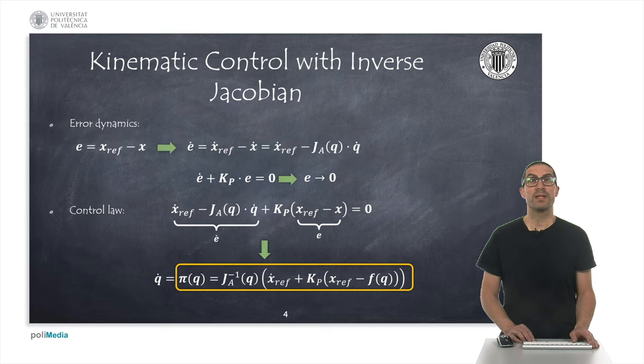If we define the error signal as the difference between the reference trajectory and the current position of the end effector, we can derive the error dynamics from its derivative. Obviously, the derivative of the error is the difference between the velocity of the trajectory and the velocity of the end effector. Using the differential kinematic model, we can express this error as a function of q and the derivative of q.